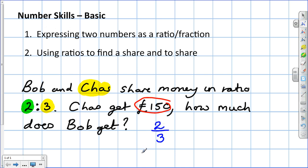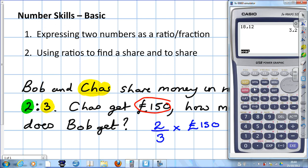Bob gets 2 shares compared to Chaz's 3. So we do 2 over 3 times 150. We'll get the calculator out. And there's the answer, 100 pounds.